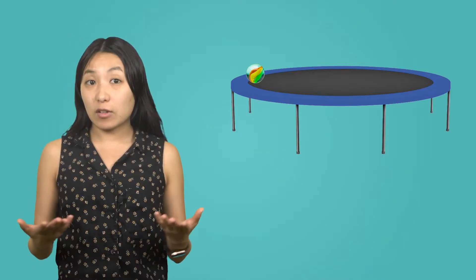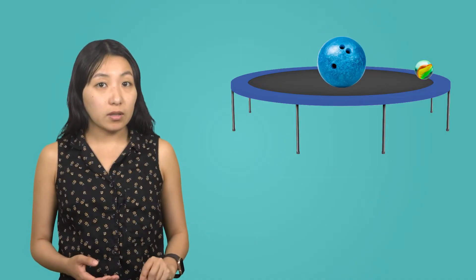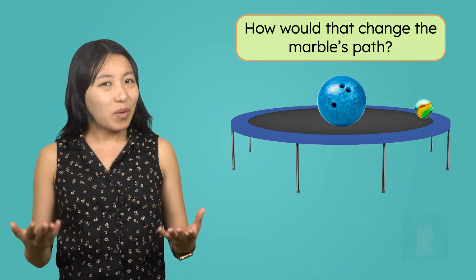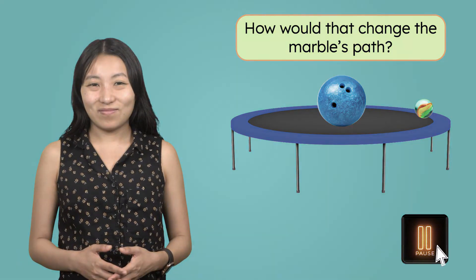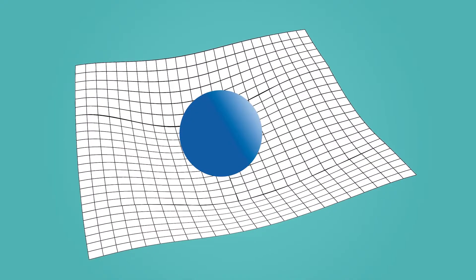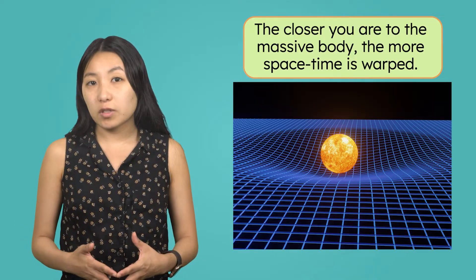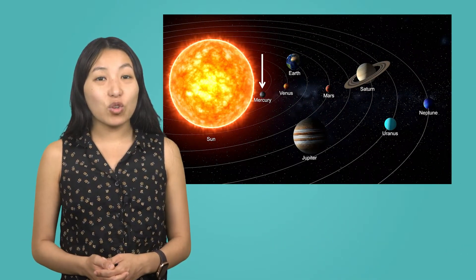Imagine you rolled a marble across a perfectly flat trampoline — it would move in a straight line. Now imagine placing a bowling ball on the trampoline. The ball creates a dip in the surface, and if you roll a smaller ball, like a marble, near the dip, the marble spirals around the bowling ball. It doesn't move in a straight line because the curved surface guides its path. The closer you are to the massive body creating the dent, the more space-time is warped. Why is this important when thinking about the orbit of Mercury?